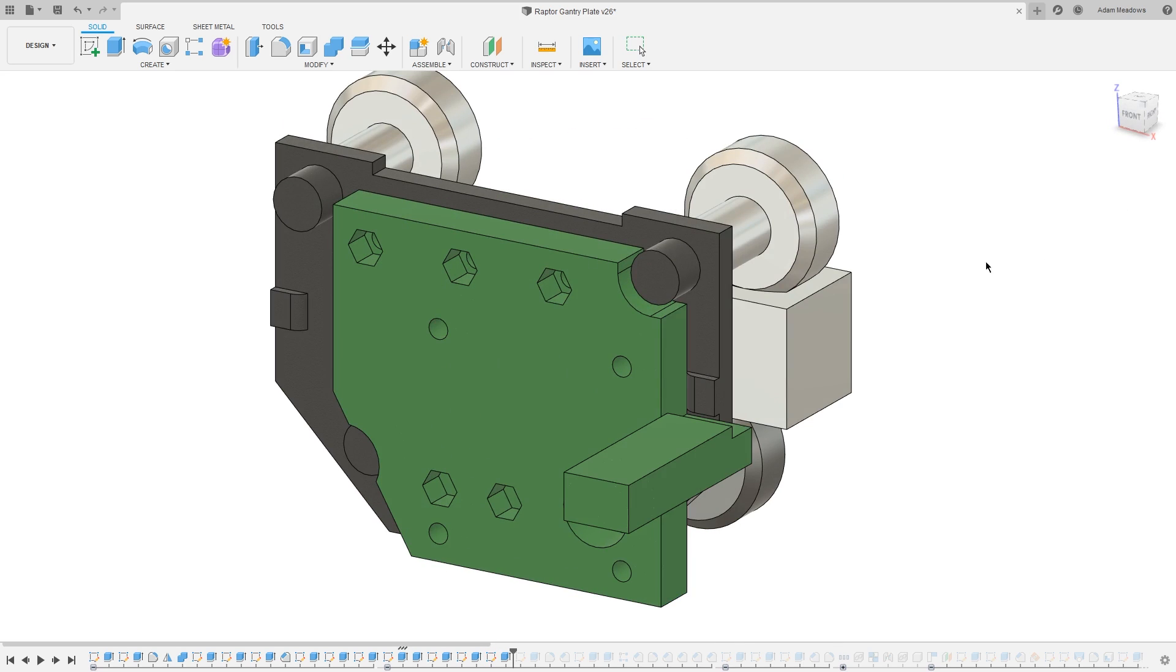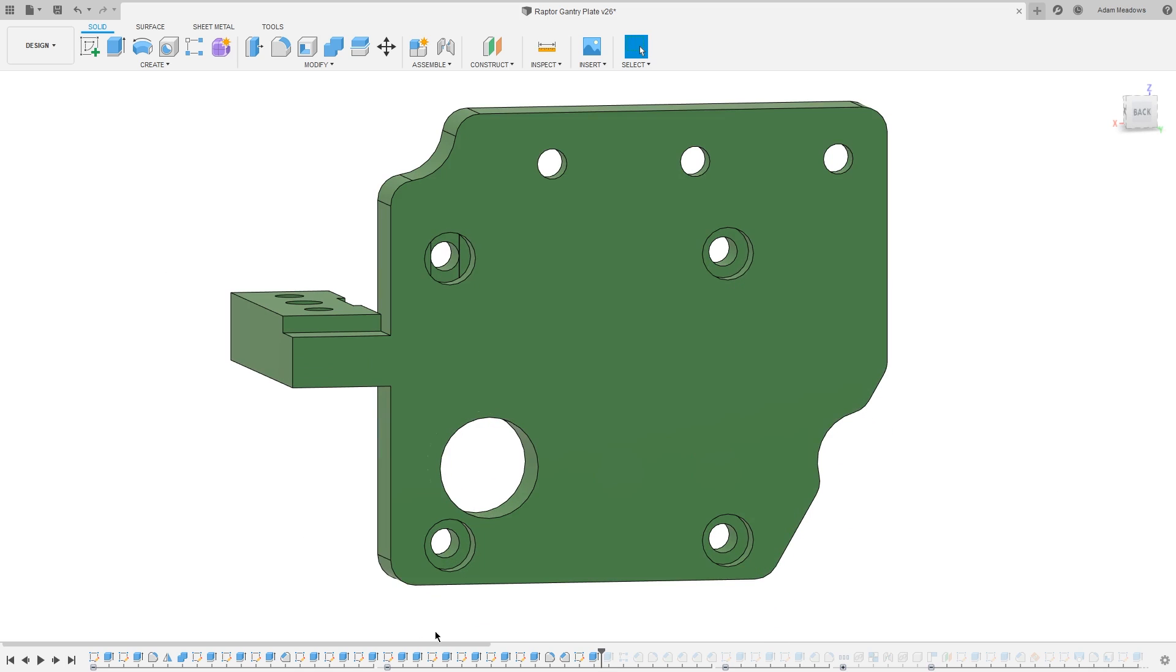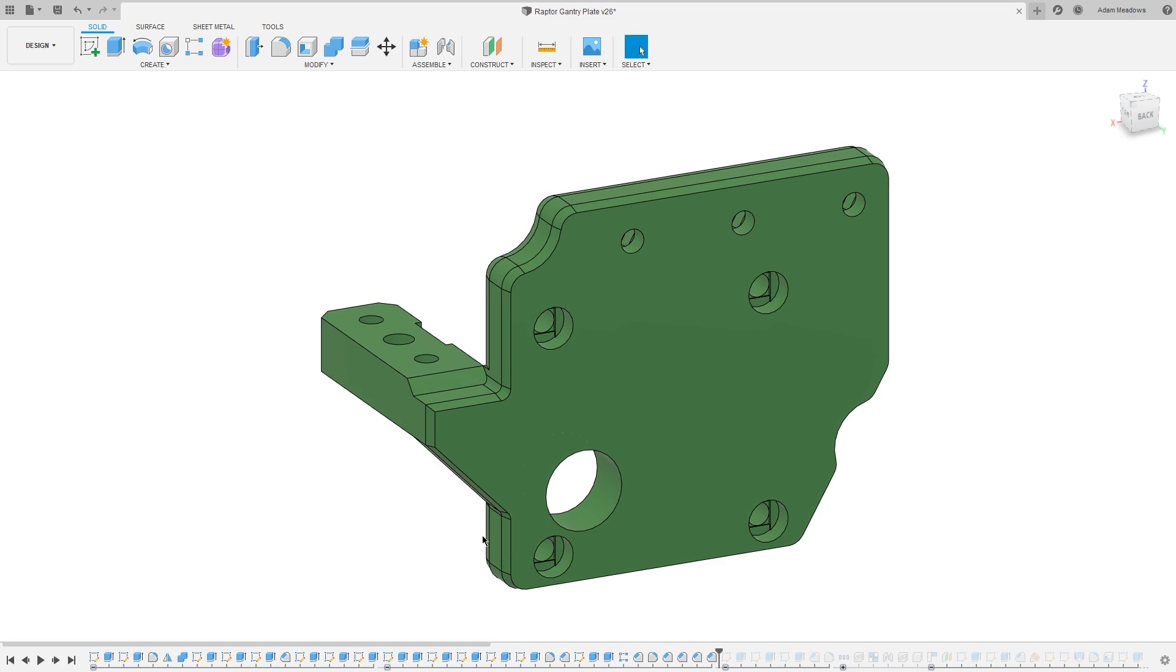Then, I added a small mount on this side for the BL Touch, with a large chamfer to aid in rigidity of that extruded shape, and finally, fillets and chamfers to improve the print and overall appearance.